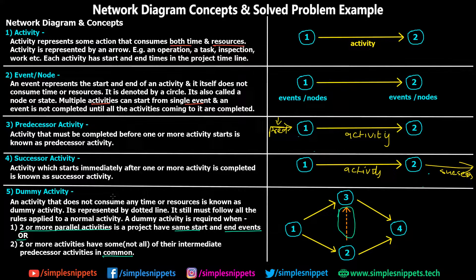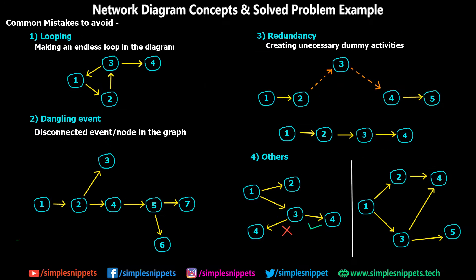Now let's move on to some common errors students make when solving network diagram numericals. The first mistake is Looping — making an endless loop in a diagram is not allowed. For example, going from node 3 to 1, 1 to 2, and 2 to 3 creates a loop, and this is something that is not allowed.